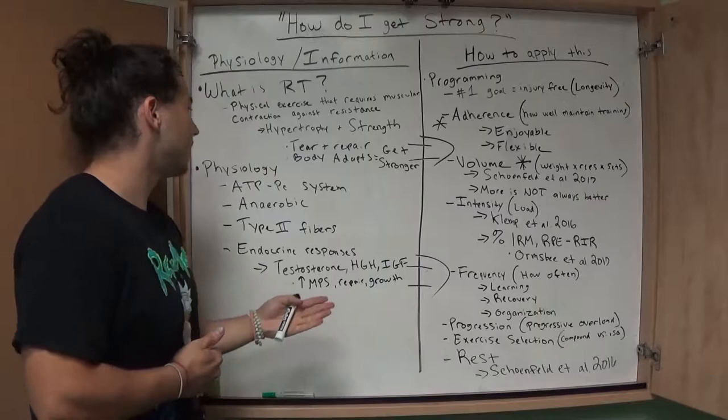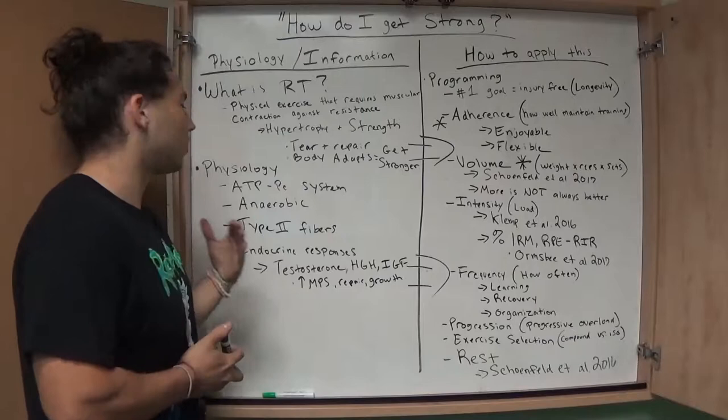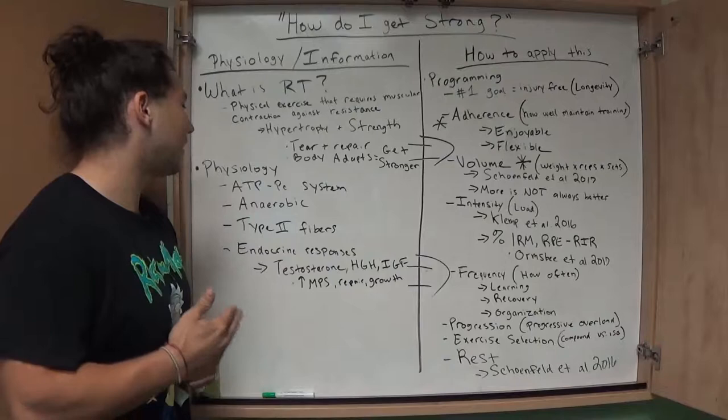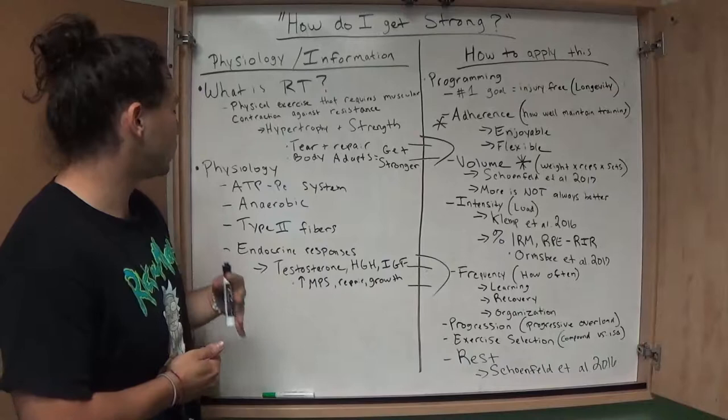So when you're resistance training, you're using the ATP-PC system, and this basically is for immediate energy, where you're getting energy from high-energy phosphates. This is also anaerobic, meaning it does not require oxygen. Resistance training also uses type 2 muscle fibers. So basically, there's two types of main fibers, type 1 and type 2, and again, type 2 are mainly in resistance training, and that's what we're going to focus on here.